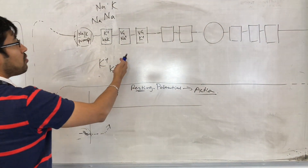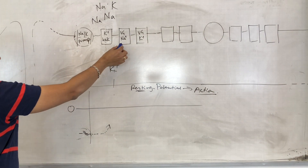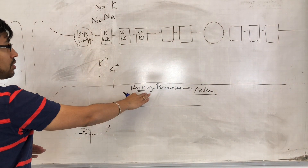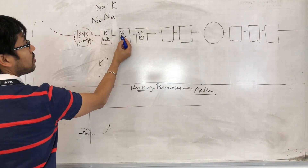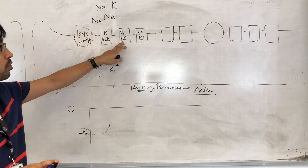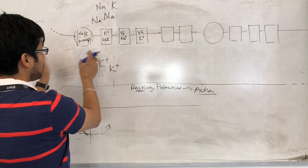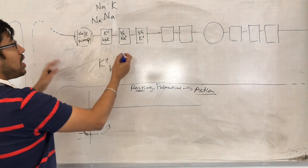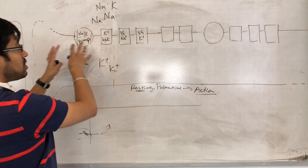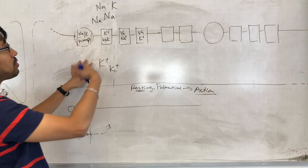When the cell starts to depolarize, it opens the voltage-gated sodium channels. These channels are usually closed at resting potential, but they are sensitive to changes in voltage. When they experience that sodium is starting to come in, these gates start to open. So a little bit of depolarization causes the voltage-gated sodium channels to open.